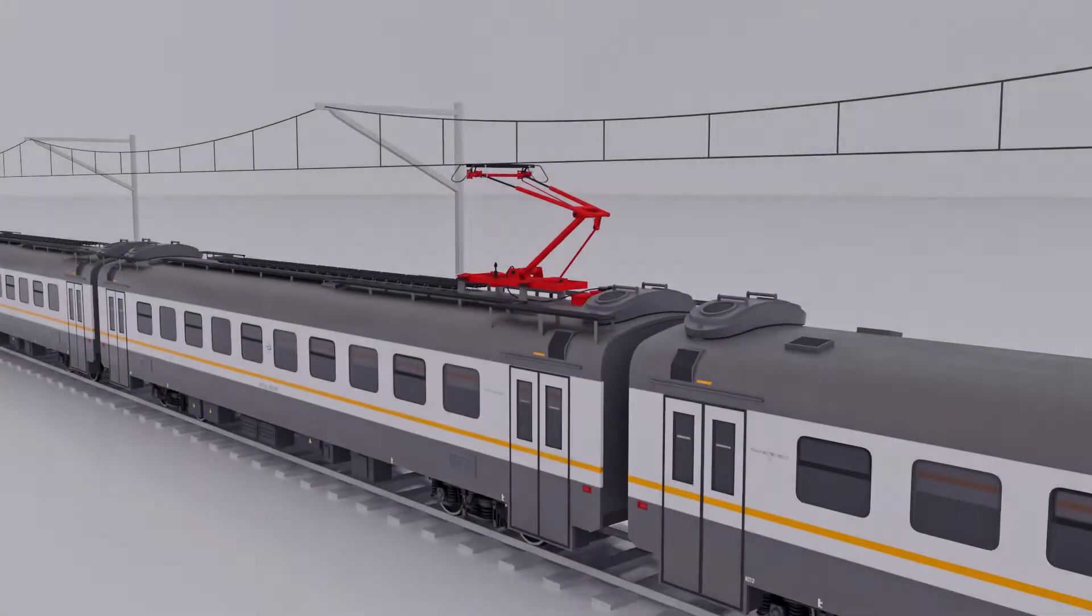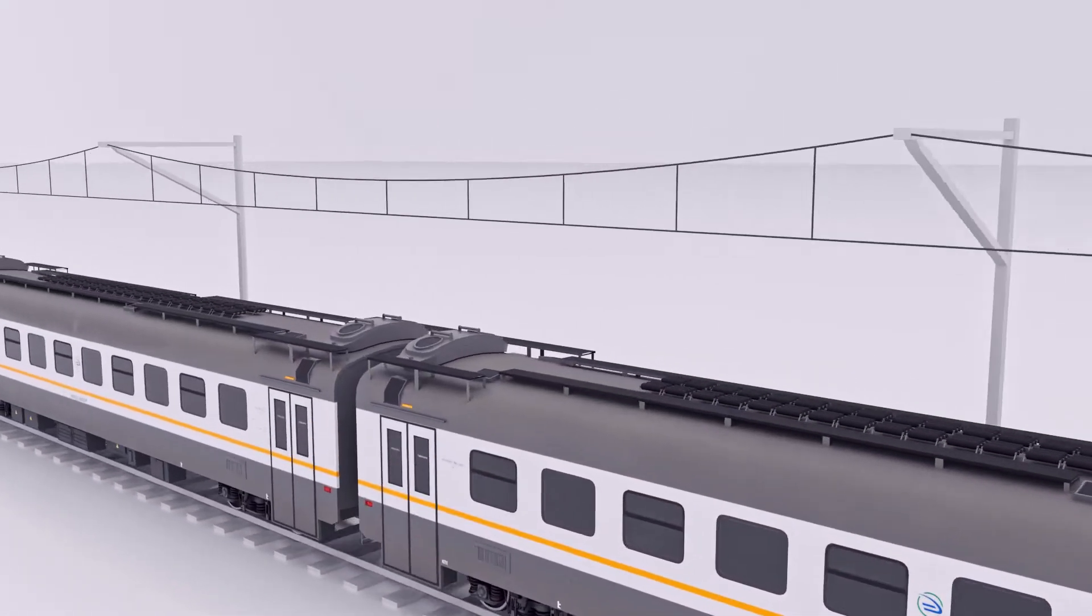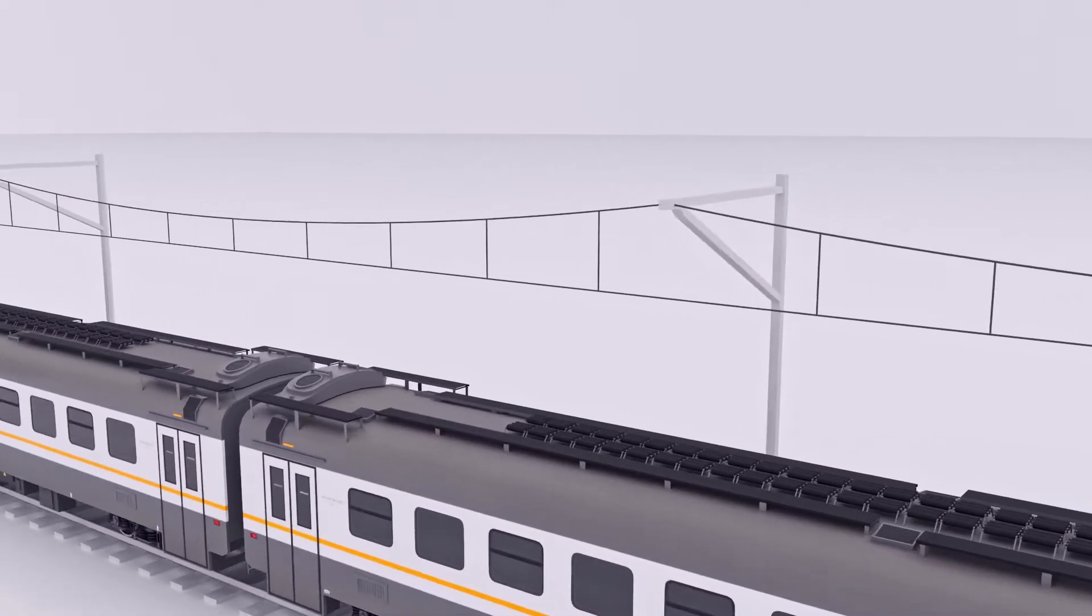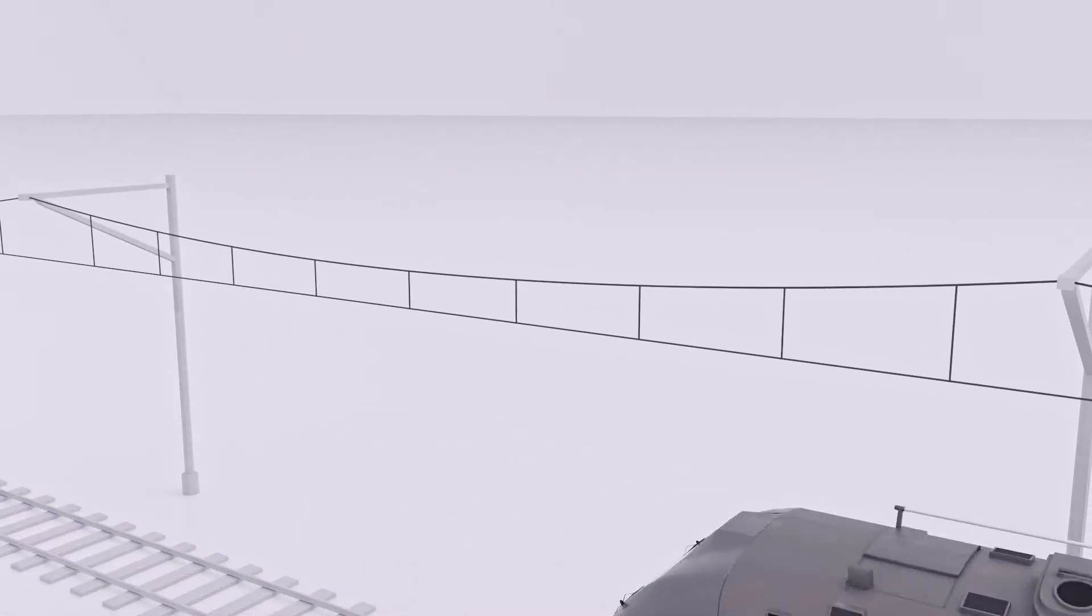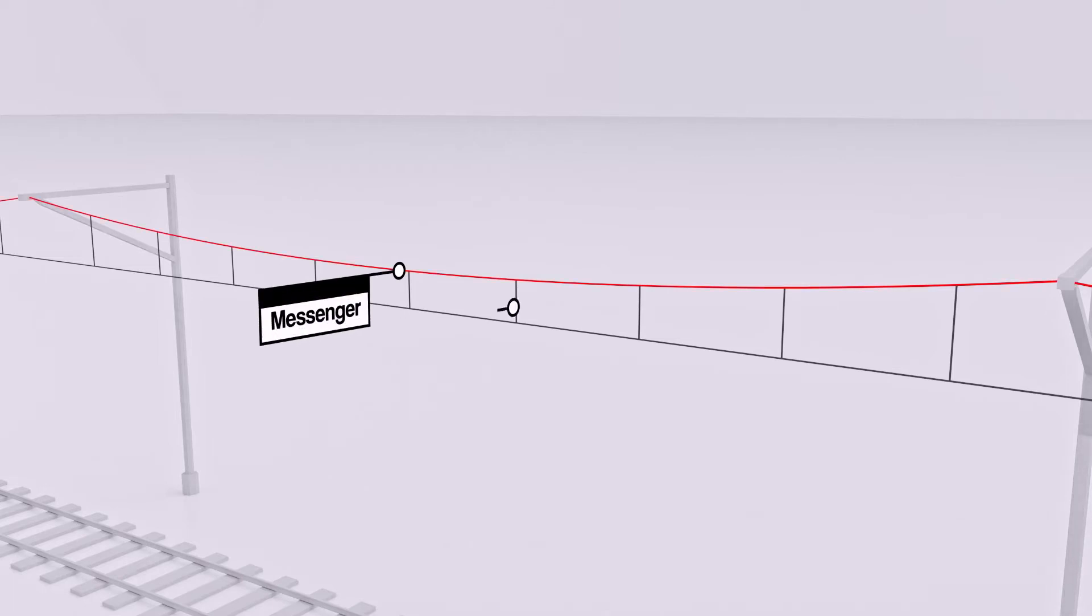In electrical trains, the power is supplied by connecting the pantograph to the overhead contact lines or catenary. This catenary's wires are generally divided into three types: messenger wire, droppers, and contact wire.